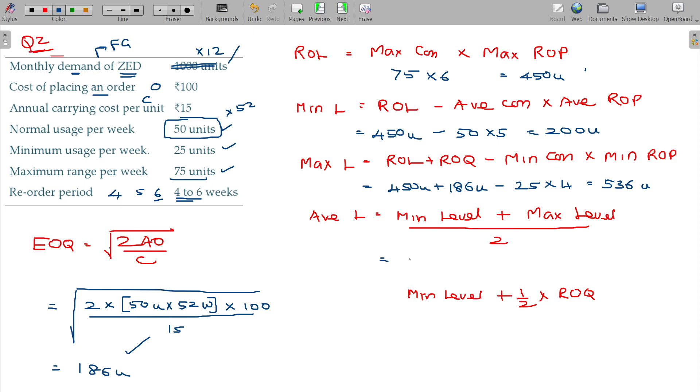And average level is equivalent to minimum level 200 units plus maximum level 536 units divided by 2. Then the ultimate value being 368 units. You can of course use the other formula also, minimum level 200 units plus half of reorder quantity 186. 293 units.